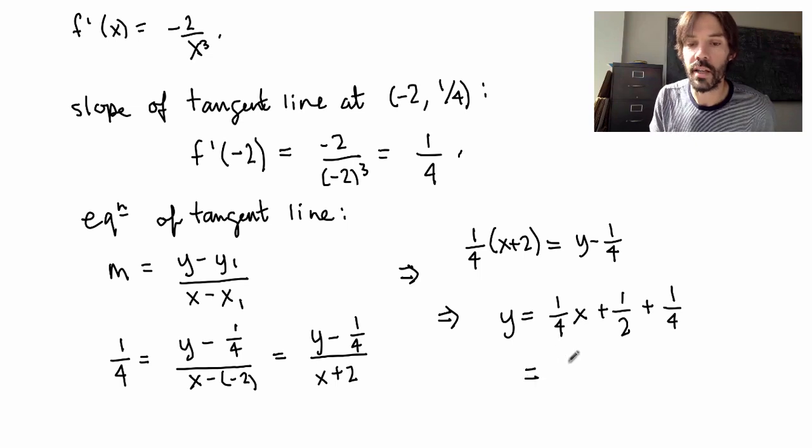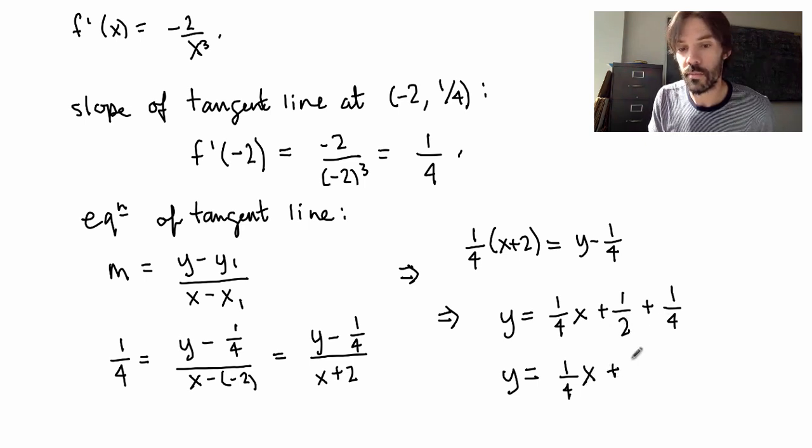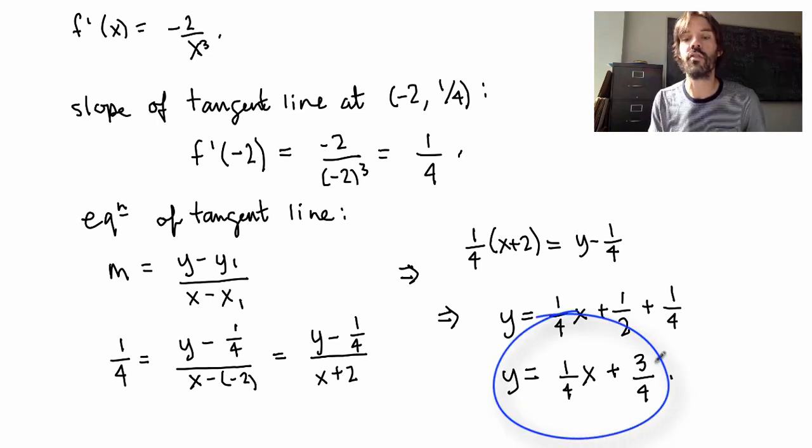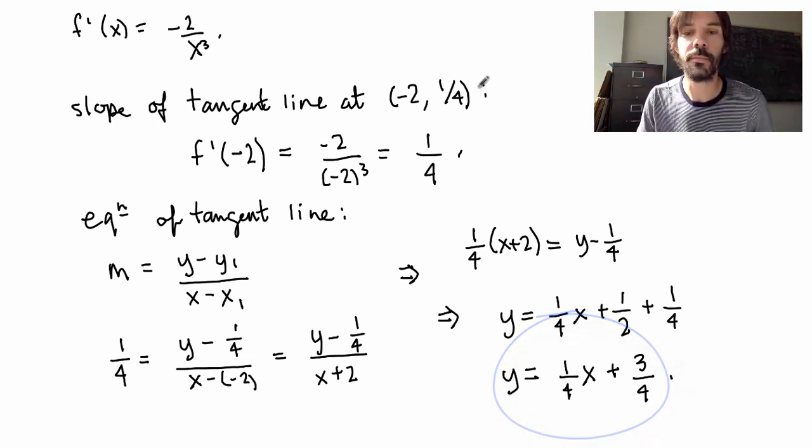Or in other words, y is equal to 1 over 4 times x plus, so this is 2/4 plus 3/4, so that gives me 3/4. Which is the final answer, which is the equation of the tangent line at this point.